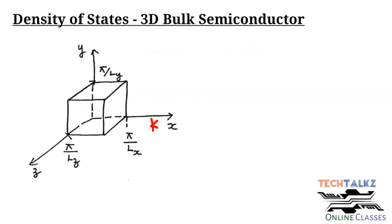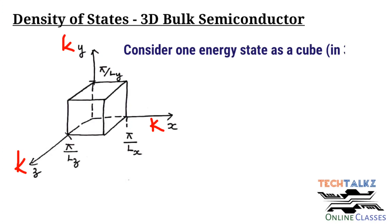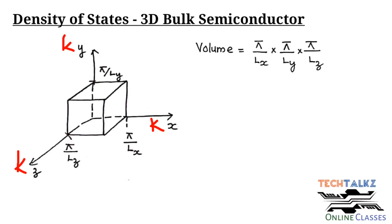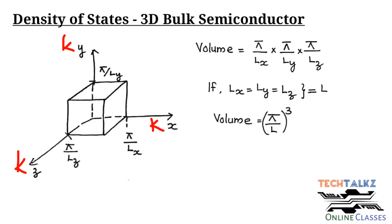In k-space we have kx, ky and kz. Considering the energy states in k-space, they occupy a cube — a 3D structure. If n = 1, the wave vector spacing across x is π/Lx, across y is π/Ly, and across z is π/Lz. So the volume of this simple cube is (π/Lx)·(π/Ly)·(π/Lz). Assuming isotropy — that is Lx = Ly = Lz = L — each state occupies a volume of (π/L)³ in k-space.